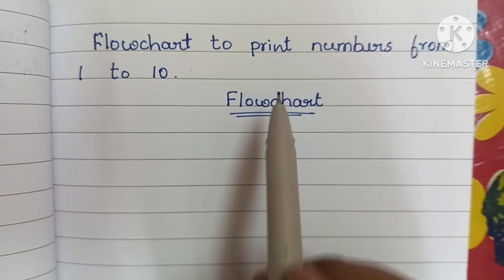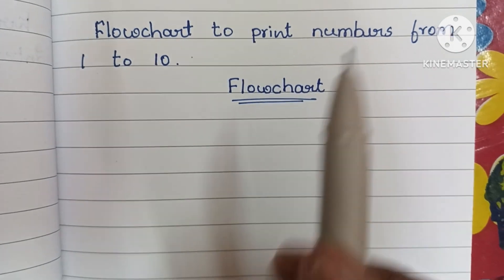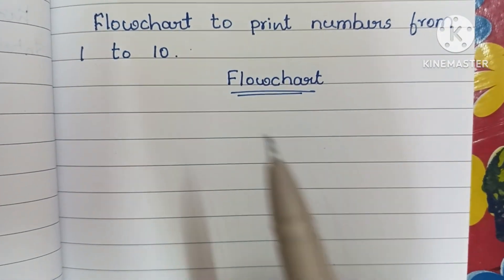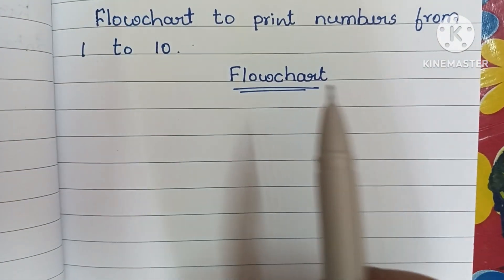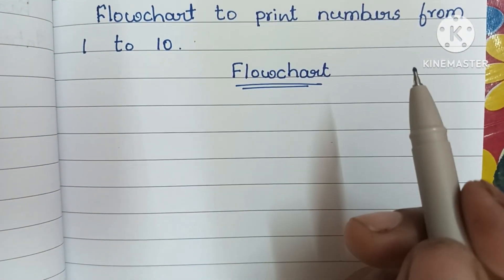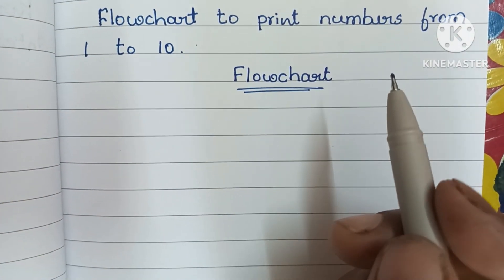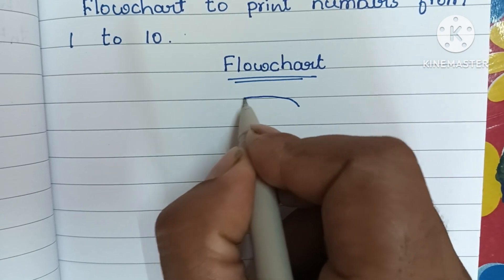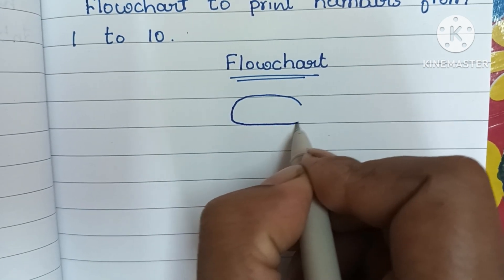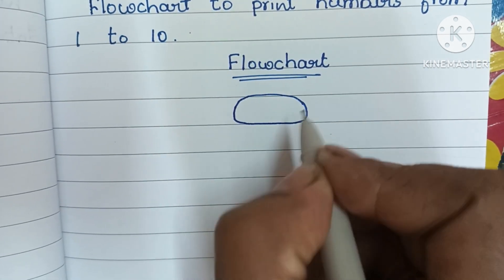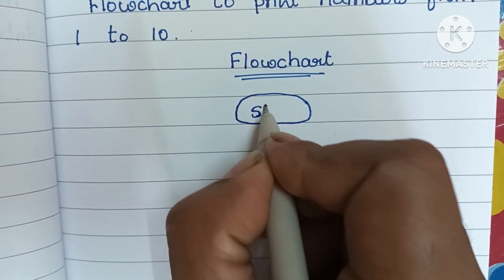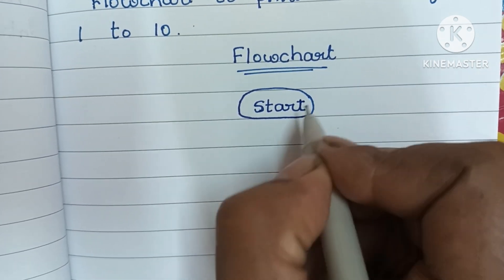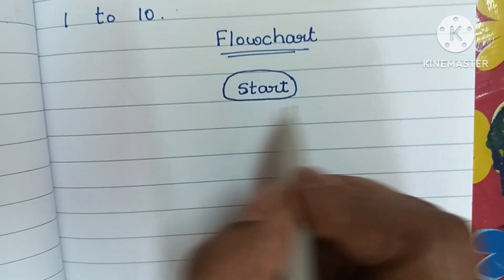A flowchart uses different geometrical symbols like oval shape, rectangular shape, parallelogram shape, and diamond shape to draw the flowchart. A flowchart always starts with a start statement, which is written within an oval shape. We have to draw an oval shape.